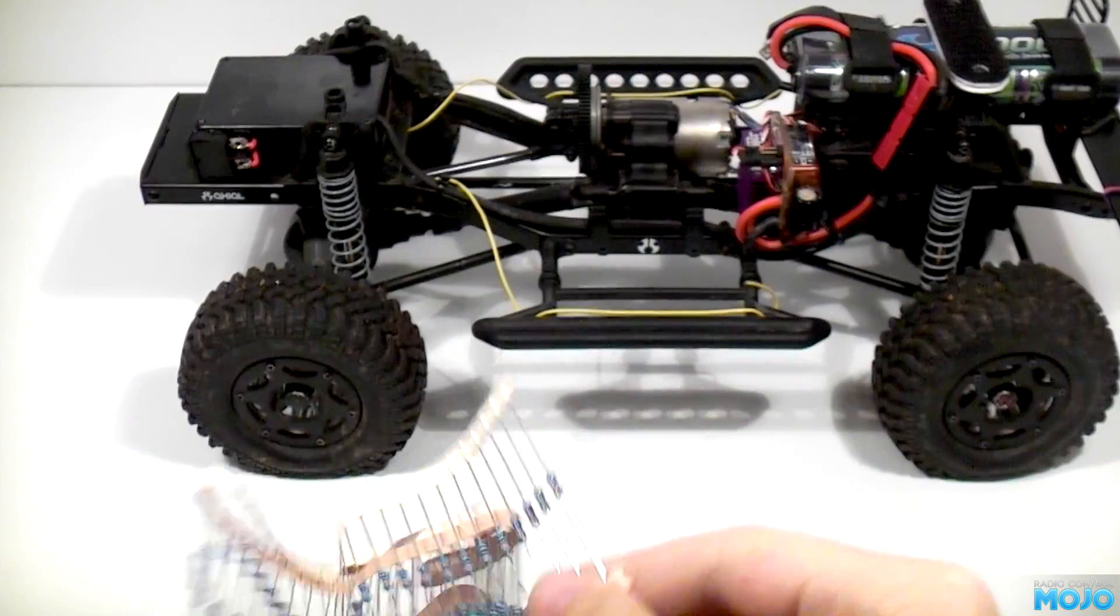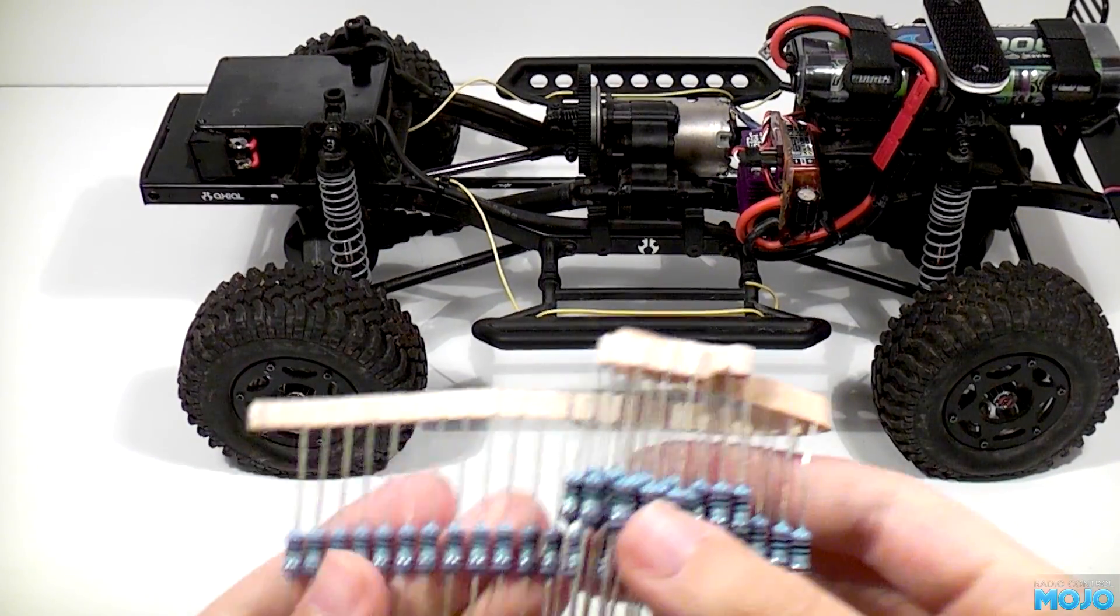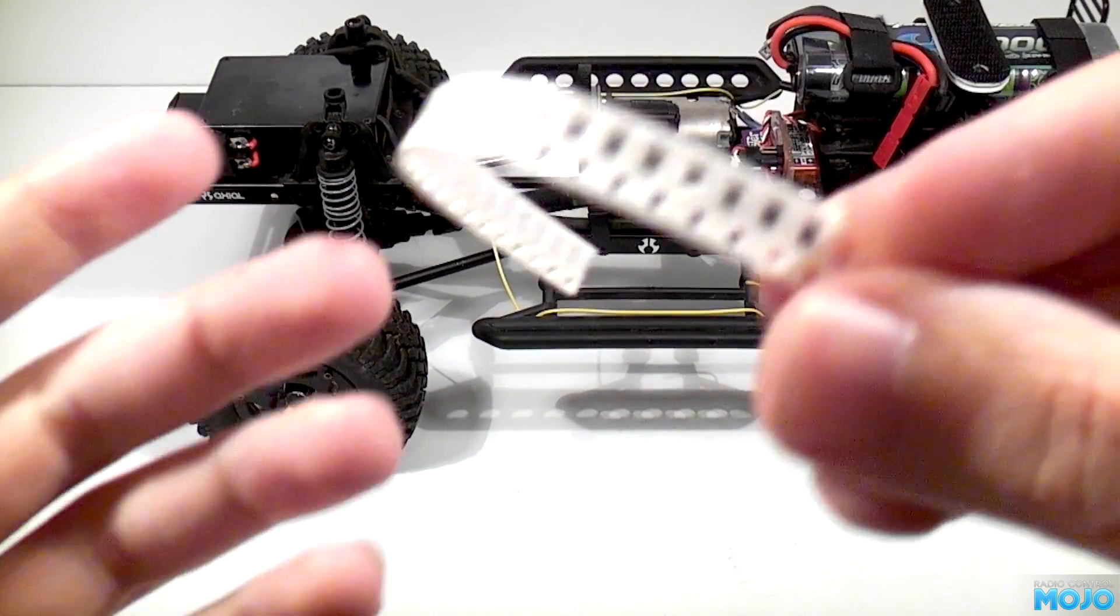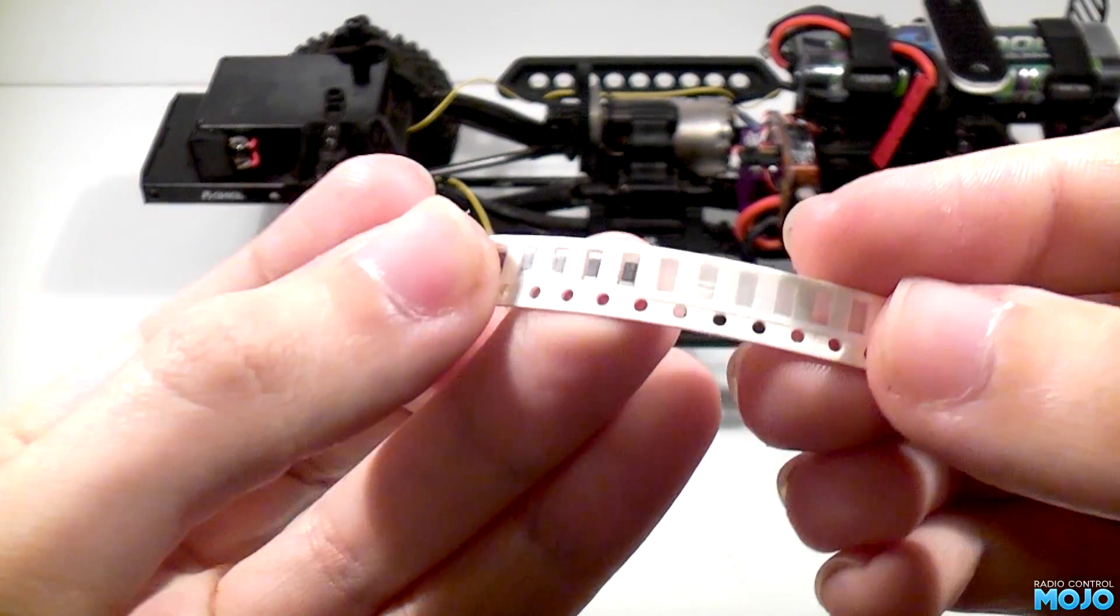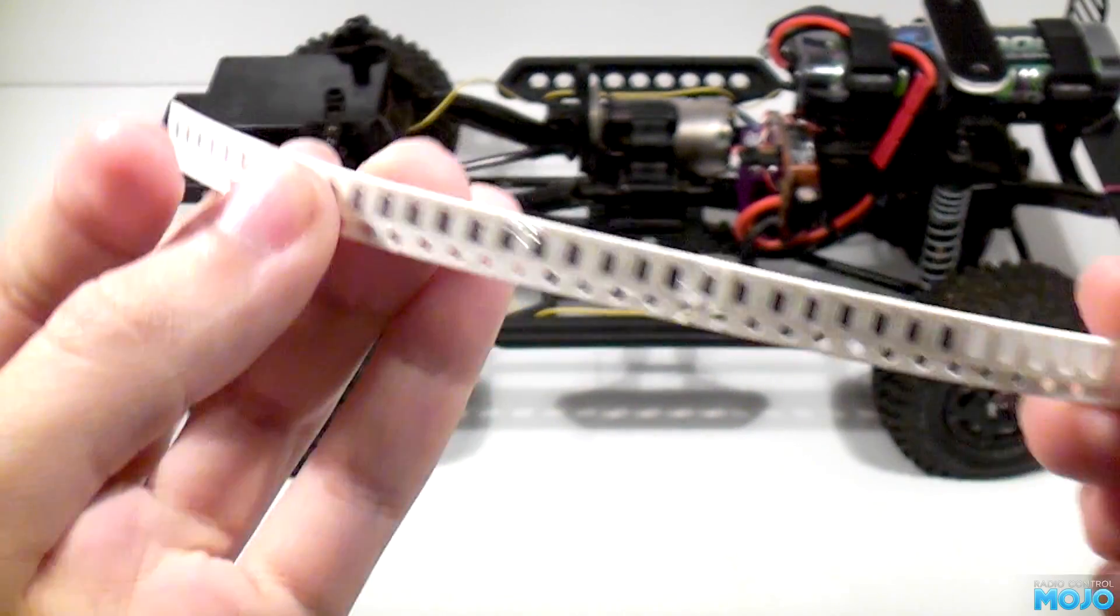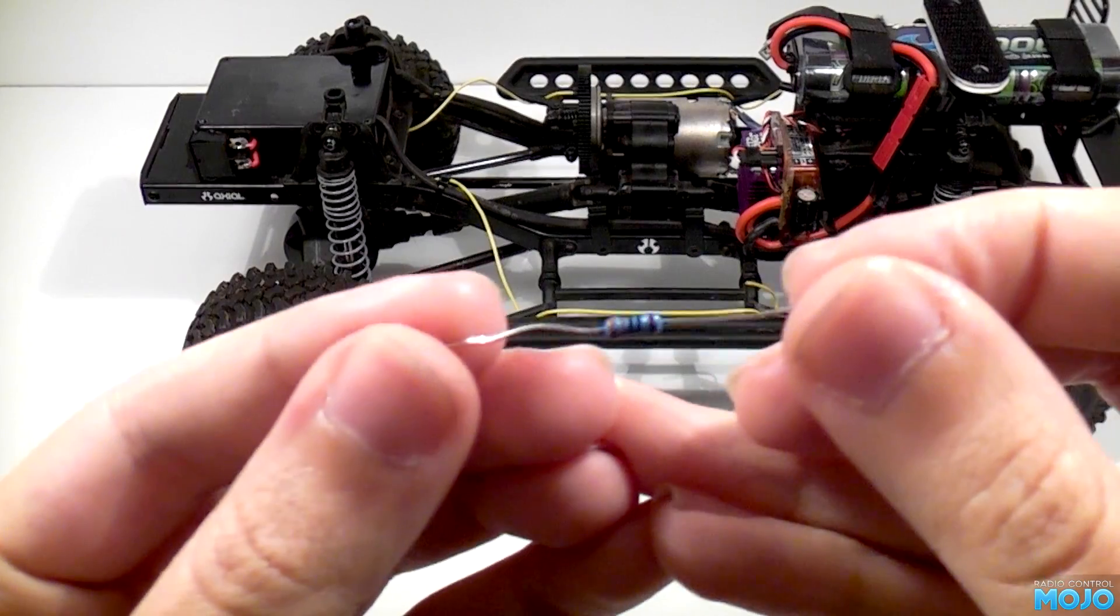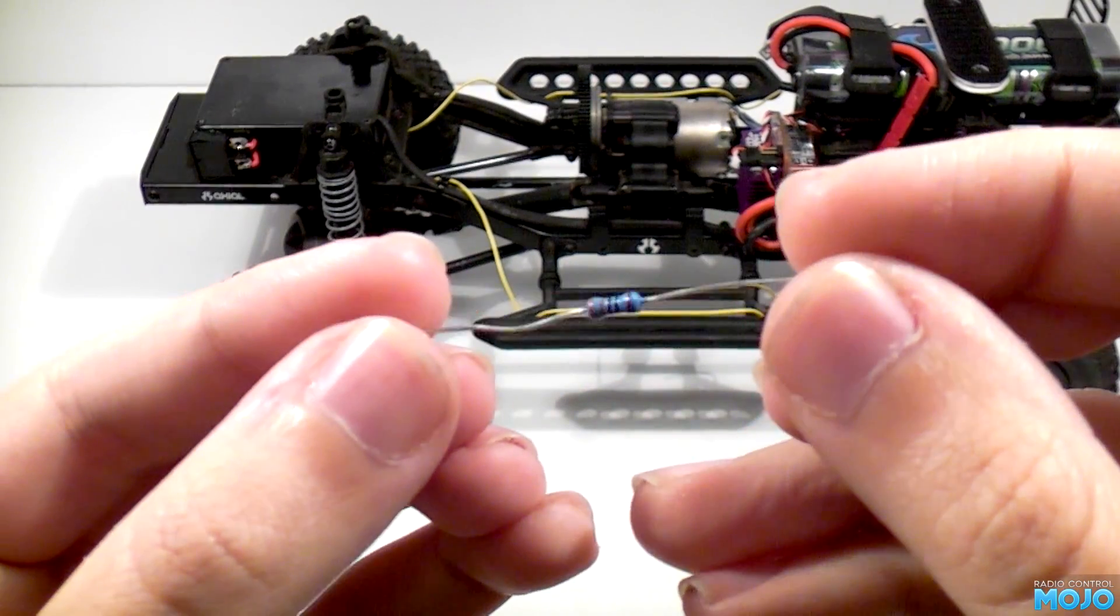The next component are the resistors. These are used to limit the current to the LEDs. Without them there is nothing but the resistance in the wires to limit the current, resulting in a damaged or dead LED. Like the LEDs, they come in various shapes and sizes, but we will be using the common leaded axial metal film type.